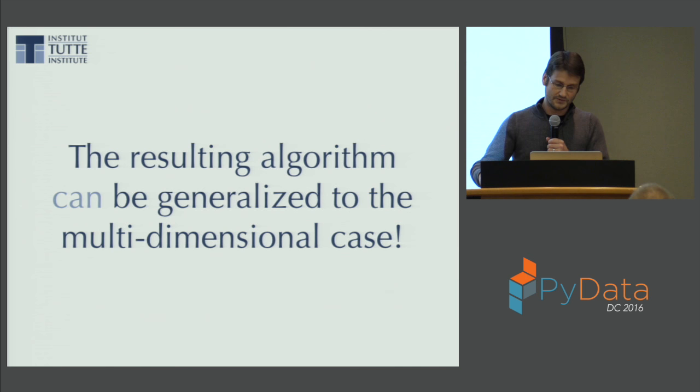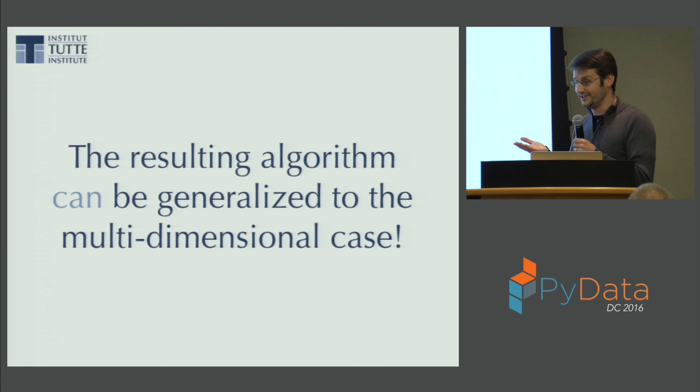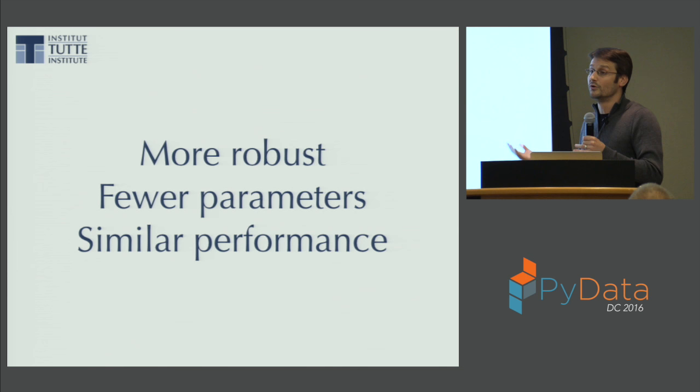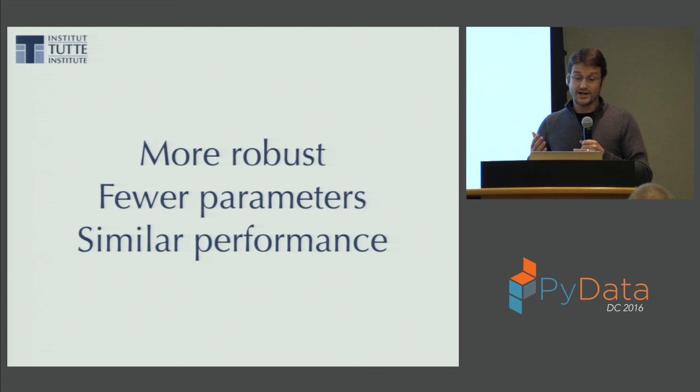When we get those details sorted out, that's going to be persistent density clustering. The main advantages: it will be even more robust, with fewer parameters — you'll only need to pick the min cluster size. In practice, we can achieve similar performance with the same asymptotics; the constants will be a little worse, but otherwise all the same.